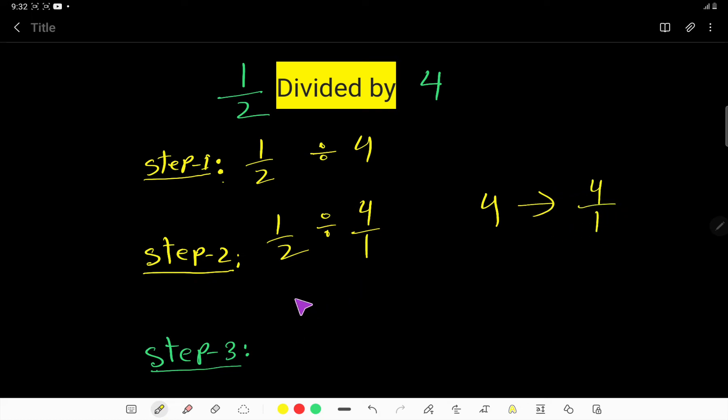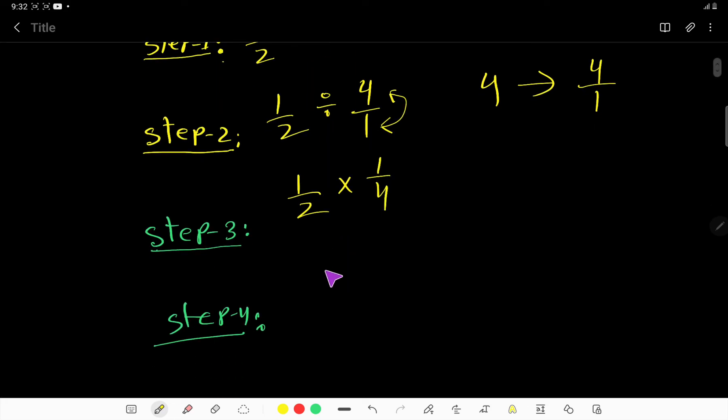So half divided by 4 over 1. Now change this division sign to multiplication, then take the reciprocal of this fraction 4 over 1, so it becomes 1 over 4. Multiply top to top and bottom to bottom.